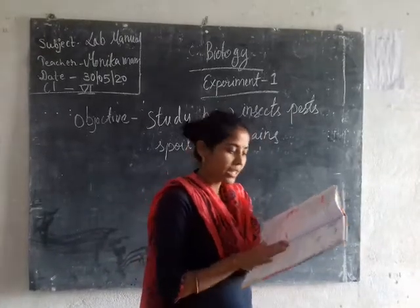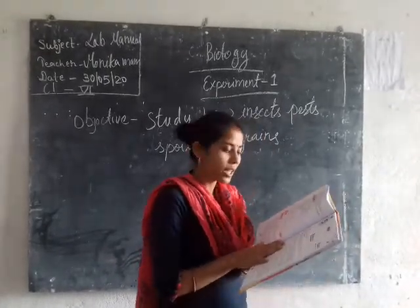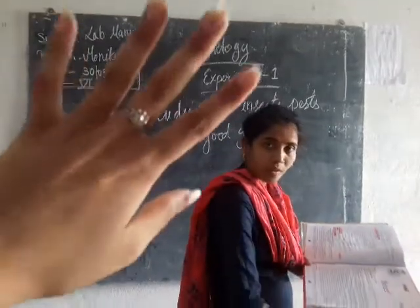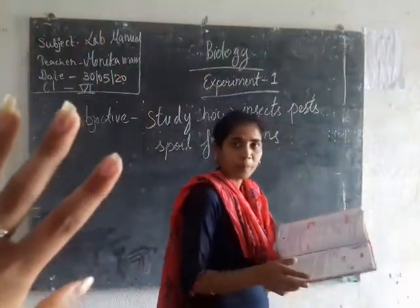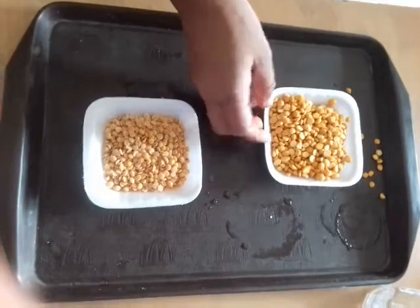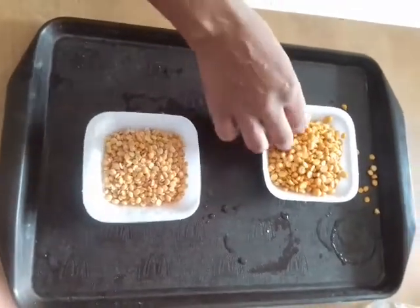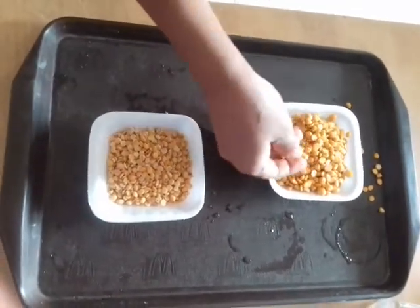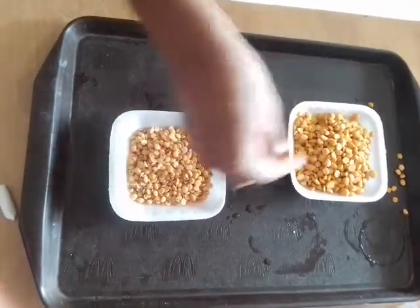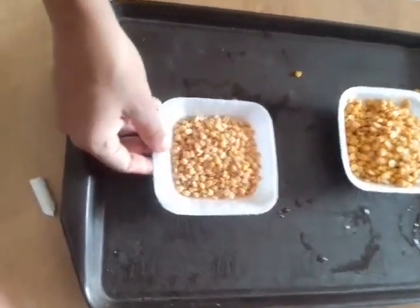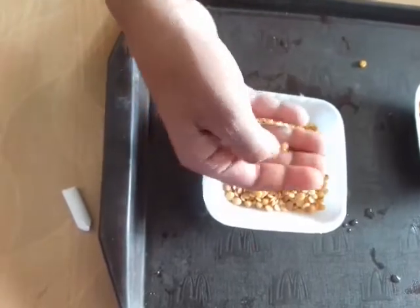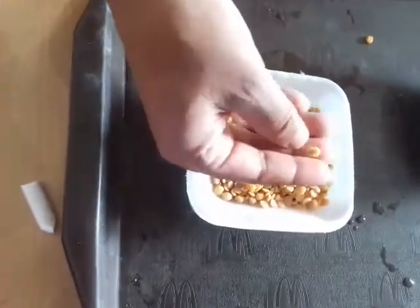For this experiment we have to take some food grains. As you can see in the video, we have taken good grains here, and the other sample is the spoiled one. You can see there are some small holes in the spoiled food grains.